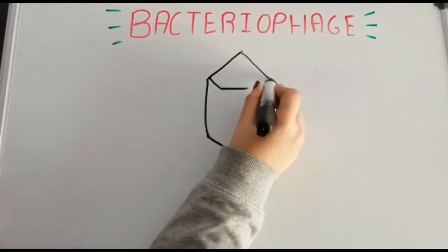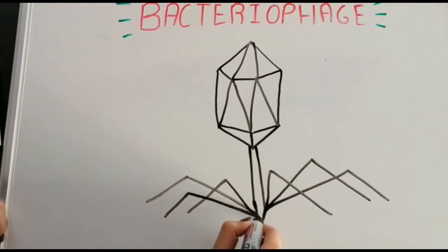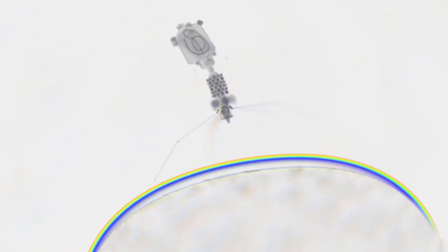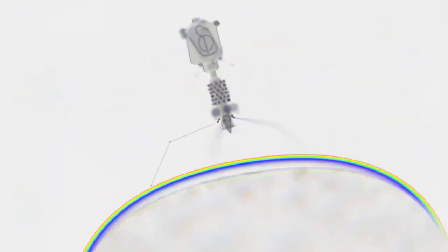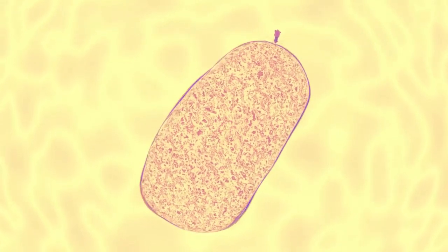Phages have an extraordinary structure. Their head is a sort of dice with 20 faces and 30 edges, where their genes are stored. It often sits on a long tail that has leg-like fibers. These filaments attach the phage to the bacteria, and the tail works like a syringe to inject its genetic information into it.